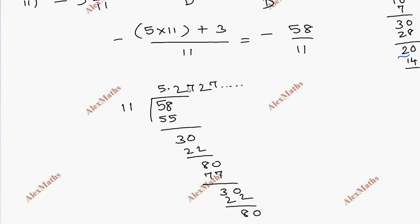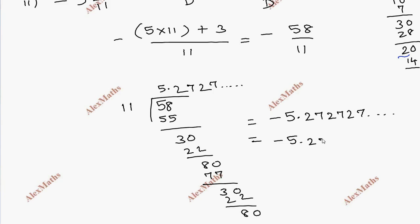So 27 is repeating. The value is minus 5.272727... So this is minus 5.27 with a bar. This is non-terminating and recurring — the same numbers repeat, so it is recurring.